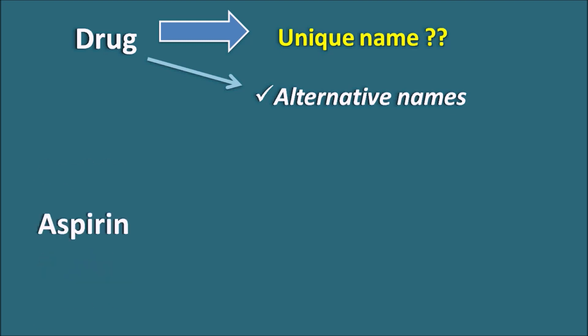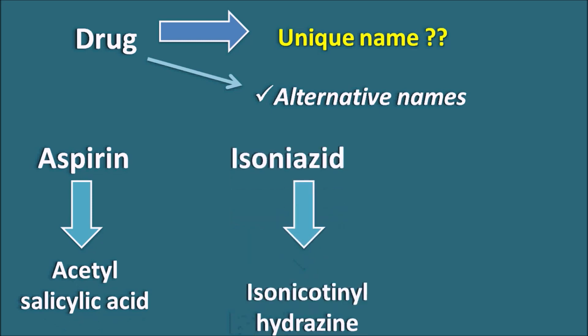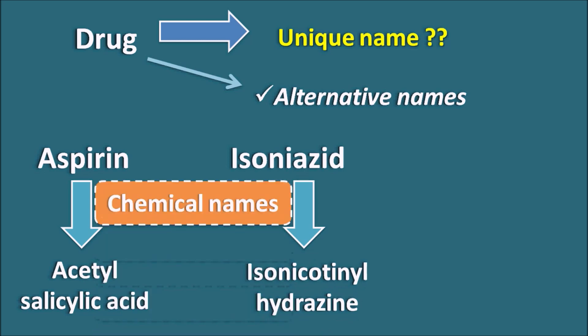For example, if you take the case of aspirin, aspirin is called as acetylsalicylic acid. Similarly, isoniazid is called as isonicotinyl hydrazine. These two are not the alternative names — these are the chemical names. Because of their simplicity in chemical structure, they can be called by their chemical names. But what is the alternative name?